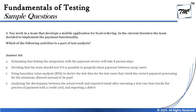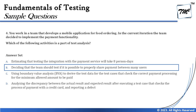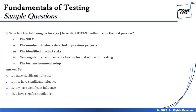The right answer for Question 4 is B. Moving on to Question Number Five: 'Which of the following factors — from the list of five — have significant influence on the test process?' The five factors listed are: the SDLC, the number of defects detected in previous projects, the identified product risks, new regulatory requirements forcing formal white box testing, and the test environment setup.